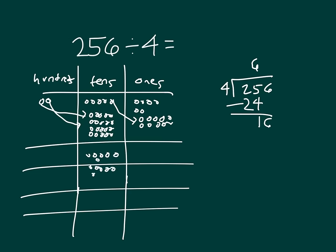Distributing 6 into each of the four groups in the place value chart.